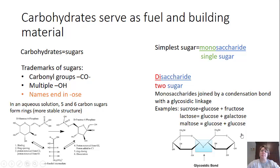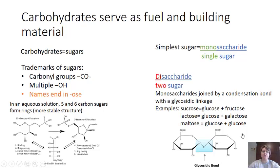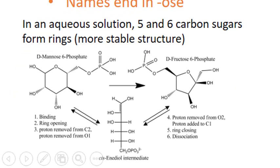Now we're going to get into our four macromolecules or polymers. Carbohydrates are our first one and they serve as our fuel and building material. Carbohydrates are simply sugars. Trademarks of sugars: they have a carbonyl group, which typically shows first as a carboxyl group and then forms a carbonyl group after condensation reactions. There are also multiple hydroxyl groups, and almost all of our names for carbohydrates end in -ose.